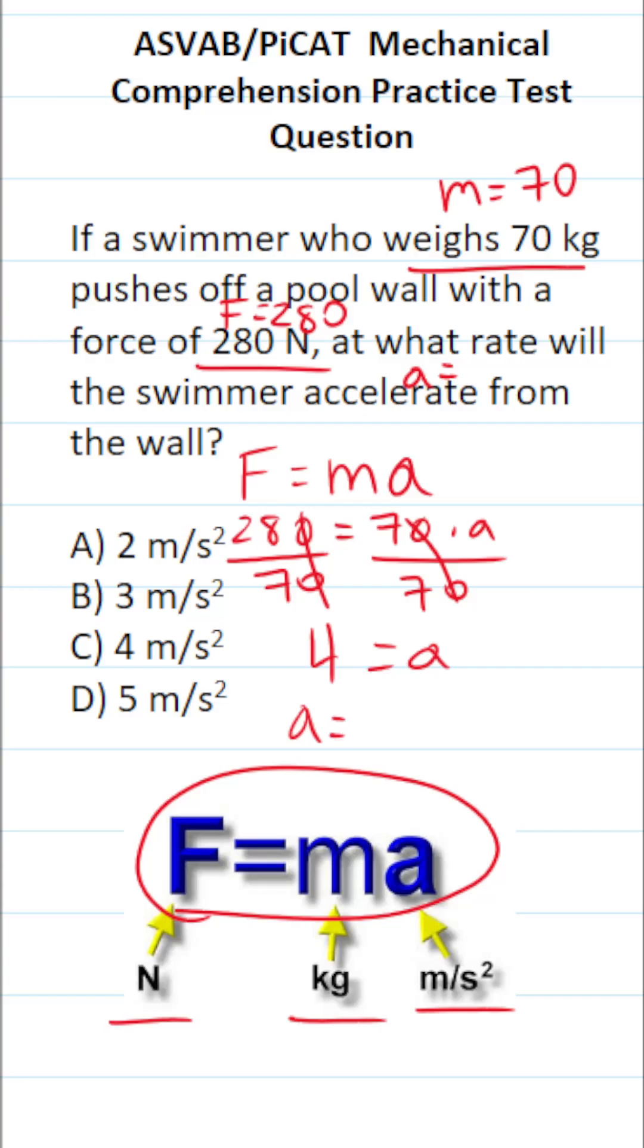In other words, the swimmer is going to accelerate at a rate of 4 meters per second squared. So this one is going to be C.